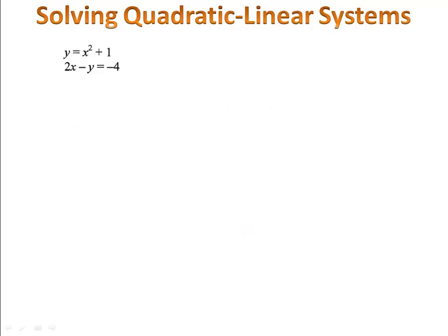In our next example, we have y = x² + 1 and 2x - y = -4. We have to begin by making sure both equations are in the form y equals. Our second equation becomes y = 2x + 4.